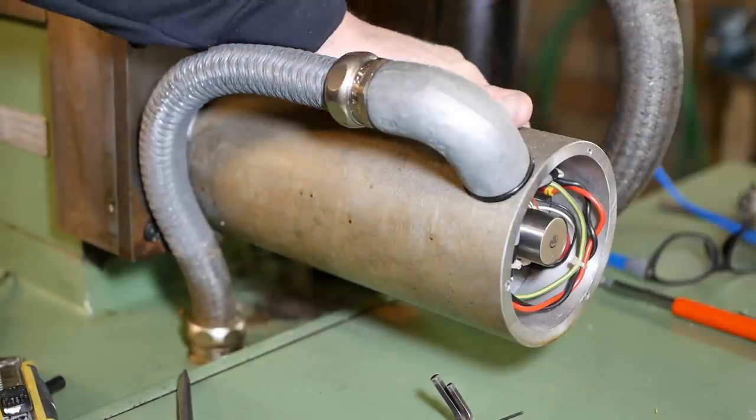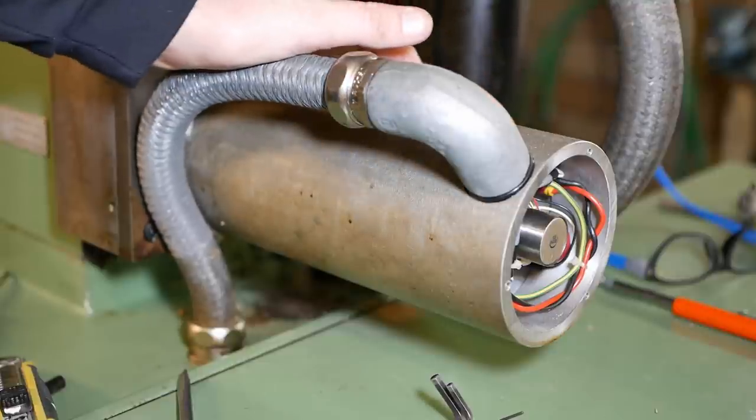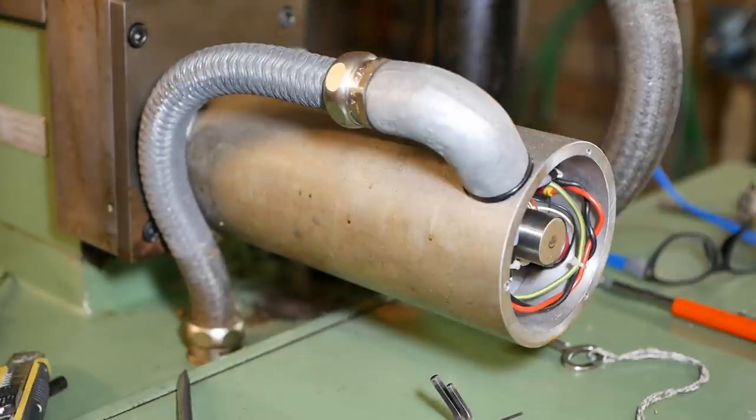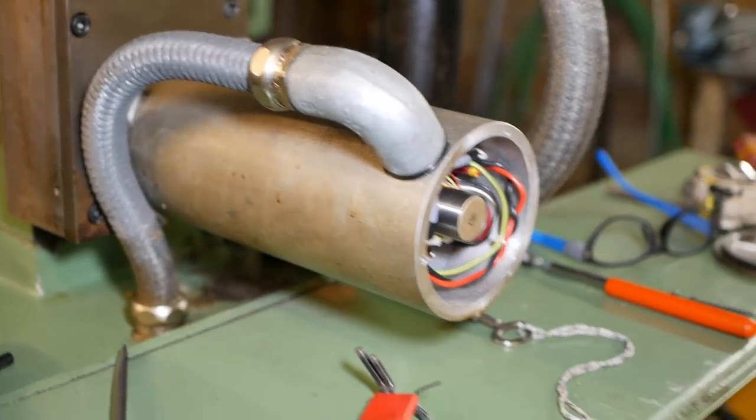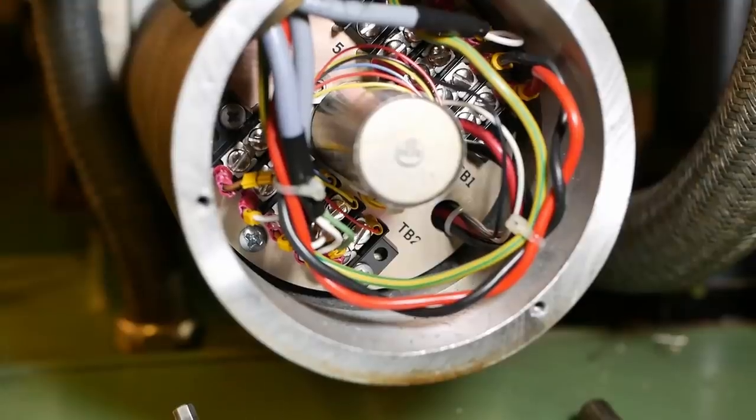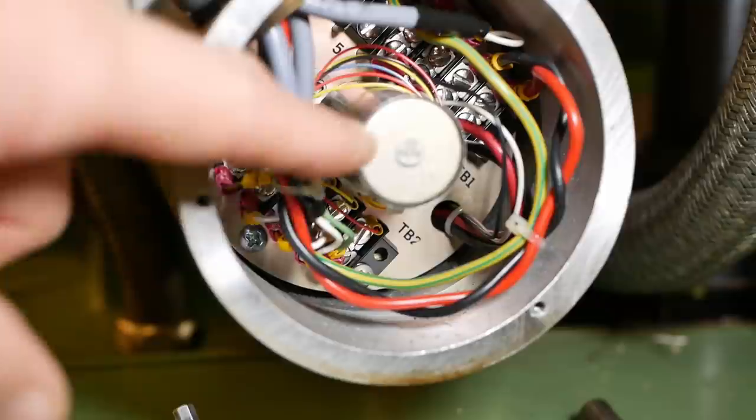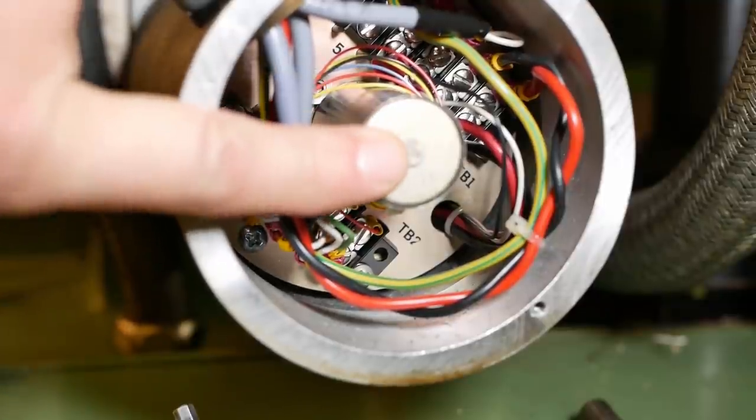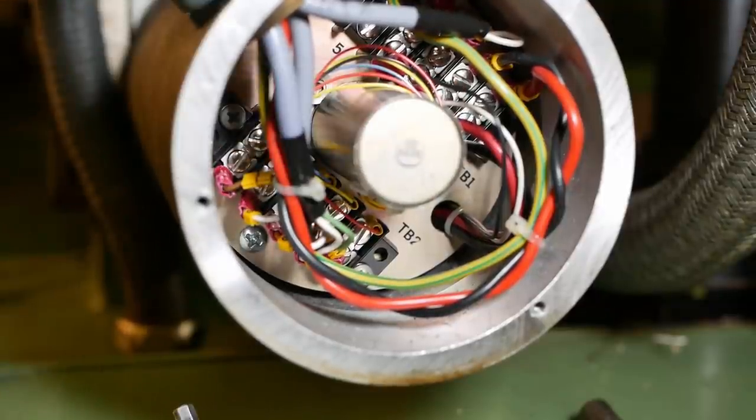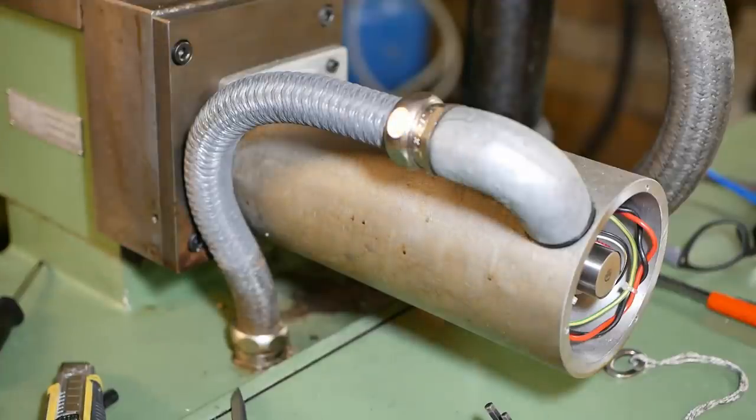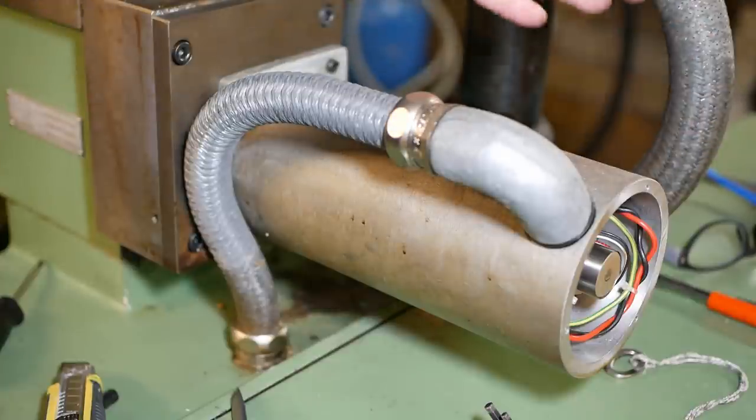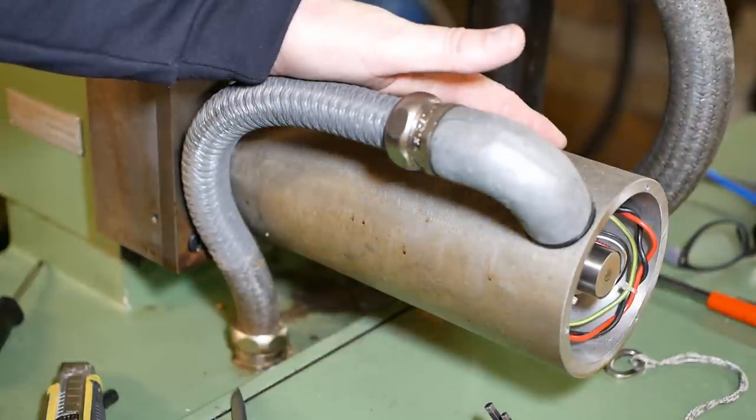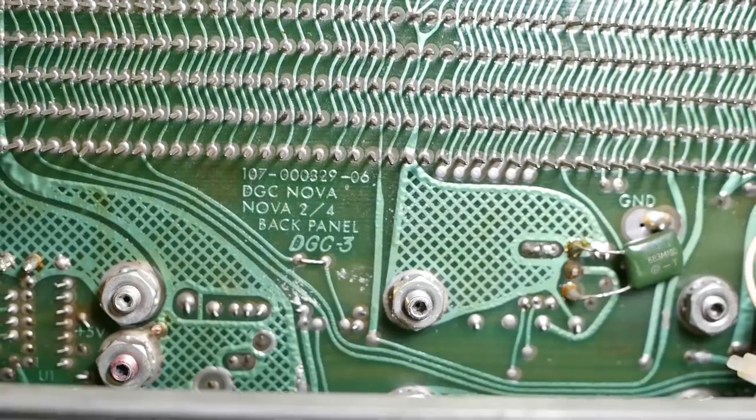To get this running under LinuxCNC, it looks like I've probably got four different options. One would be keep the motors, keep the resolvers and just work out how to plug into these existing massive drives and reuse them. The second option is probably replace this resolver with an encoder but keep the motor and use some modern DC drives. The third option is probably replace the motors and the drive with modern AC servos. So what do you think you would do if this was your machine?